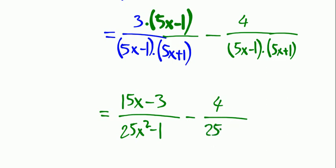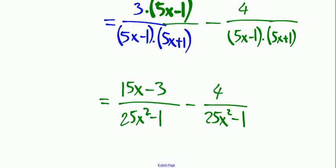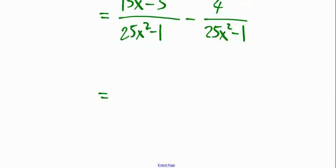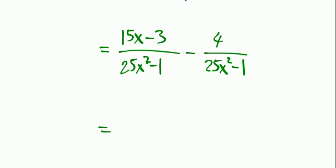Minus 4 over 25x squared minus 1. At the end, we can write over the same denominator because they have the common denominator now. So 25x squared minus 1 is their denominator for both fractions.